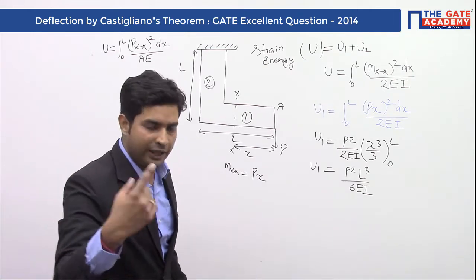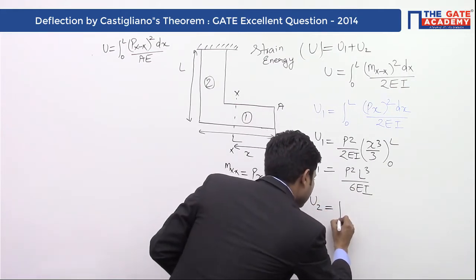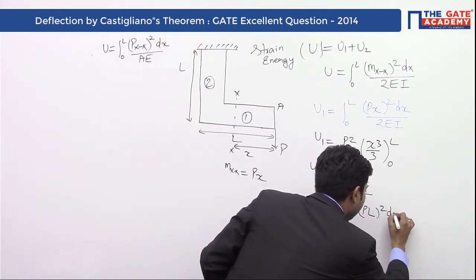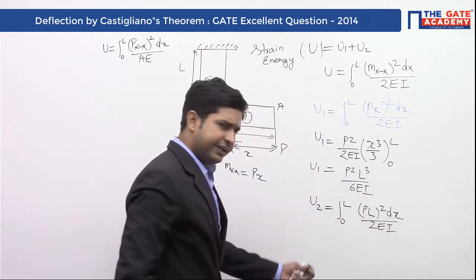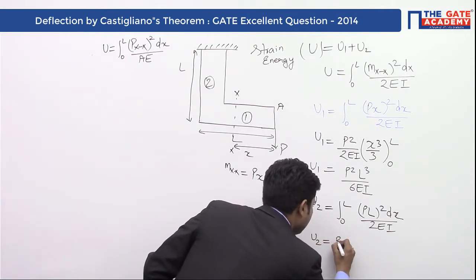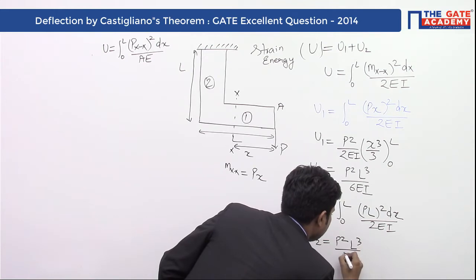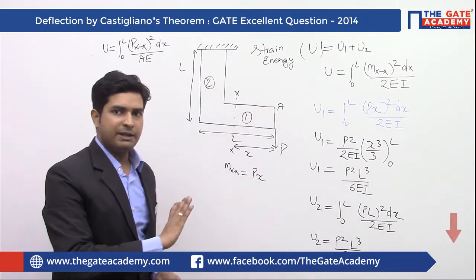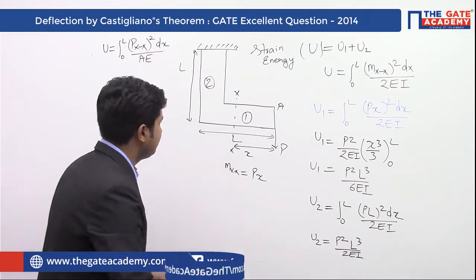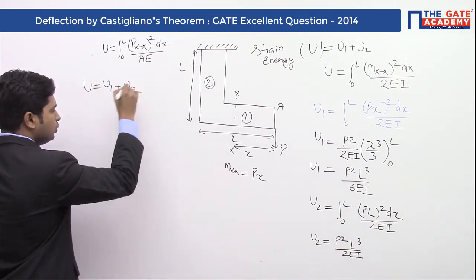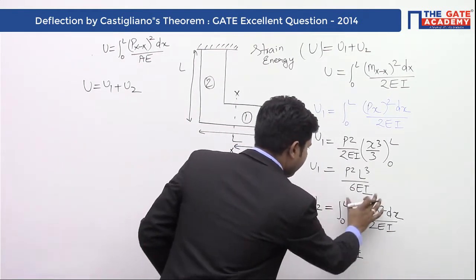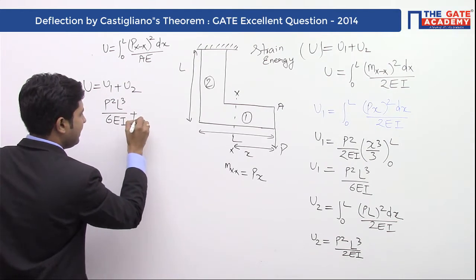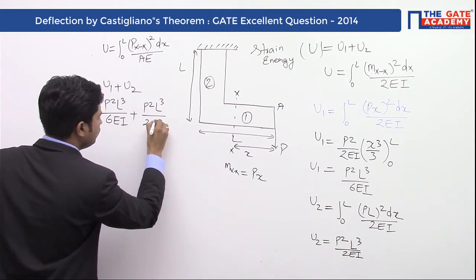For the second part, the bending moment is constant at P times L. So U2 equals the integral from 0 to L of (PL) squared dx divided by 2EI. Integrating, U2 equals P squared L cubed divided by 2EI. The total strain energy U equals U1 plus U2, which is P squared L cubed divided by 6EI plus P squared L cubed divided by 2EI.